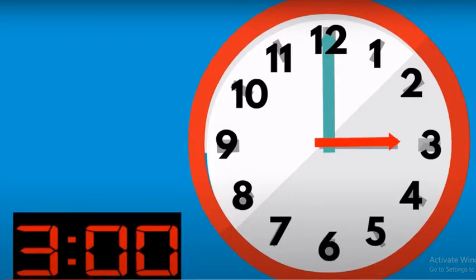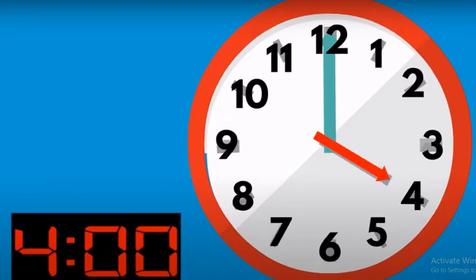Let's have a look at this one. The blue pointer is still pointing at number 12. Let's look at the other pointer, which is the red one. It's pointing at number 3, so it's 3 o'clock. Let's look at this clock now — what time is it? The blue pointer is still on number 12. The red one is pointing at number 4, so it's 4 o'clock.